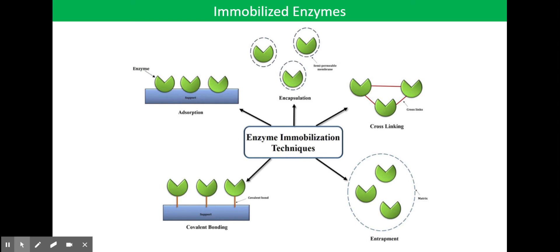Calcium alginate beads are often used in schools to immobilize enzymes by entrapment. Industrial processes may also use a cellulose mesh.